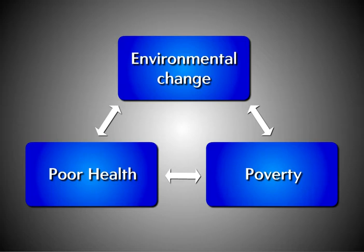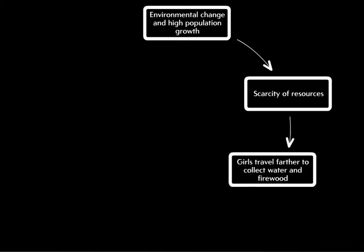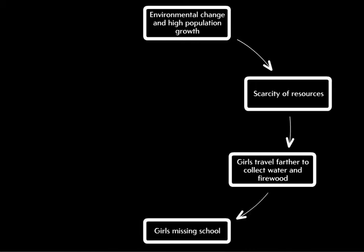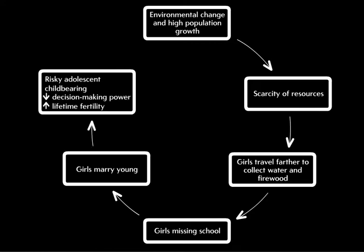The relationships between population, health, and environment can take many different forms. For example, environmental change and the rapidly growing population both work to increase pressure on natural resources. Girls may have to spend increasing amounts of time finding water and firewood for the home, which may lead to girls dropping out of school. Girls with little or no education are more likely to marry early. Early marriage leads to early childbearing, which involves health dangers for mother and child, lower decision-making ability in their homes, and higher lifetime fertility, which continues the cycle of high population growth.